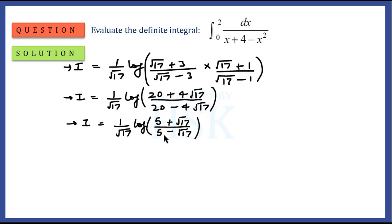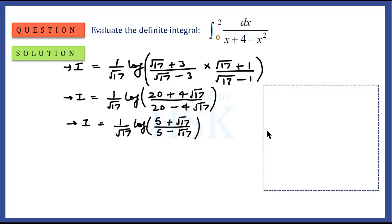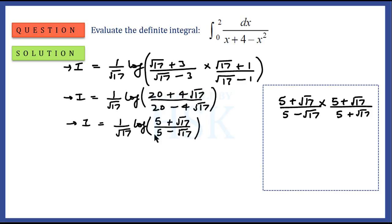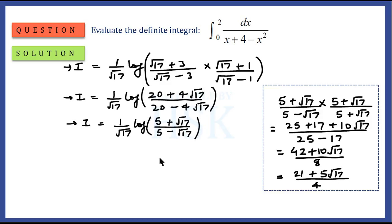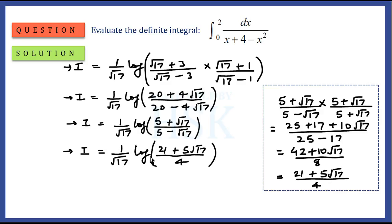To simplify further, I rationalize (5 + √17) upon (5 - √17) by multiplying and dividing by the rationalizing factor (5 + √17). This gives (25 + 17 + 10√17) upon 8, which simplifies to (21 + 5√17) upon 4. Therefore, the final answer is I equals 1 upon √17 times log of (21 + 5√17) upon 4.